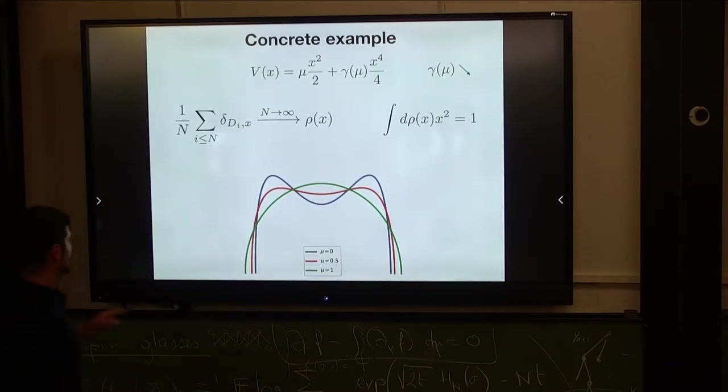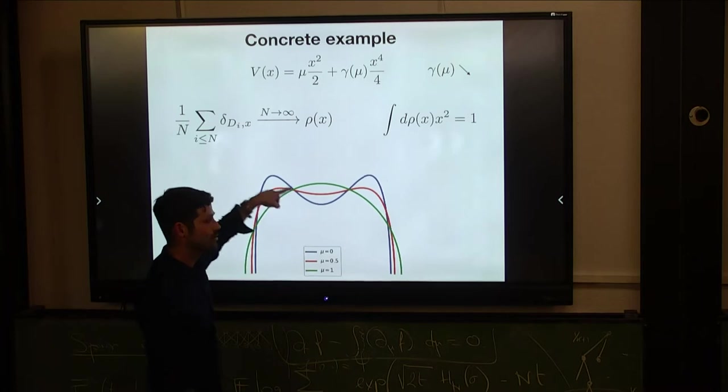The density. When mu is zero, you have the most structured case, and gamma is a finite constant.